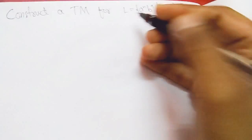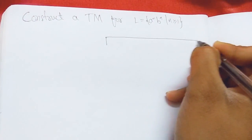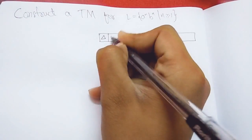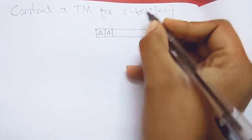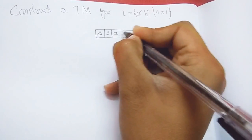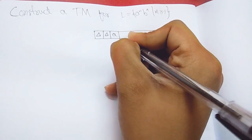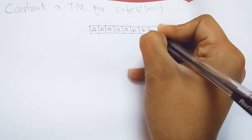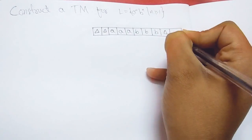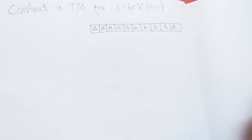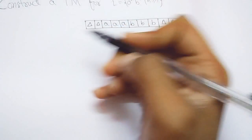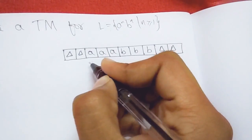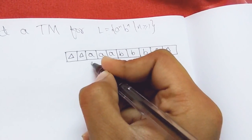To construct a Turing machine, let us construct an input tape first for the string aⁿbⁿ. I write Delta as the blank character, and then the string with equal number of A's and B's — AAA then BBB — followed by Delta, the blank character. You can use B or F as your blank character. Here n is greater than or equal to 1.